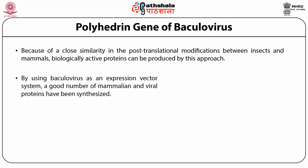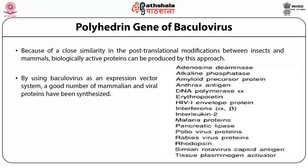By using baculoviruses as an expression vector system, a good number of mammalian and viral proteins have been synthesized. These include adenosine deaminase, alkaline phosphatase, amyloid precursor proteins, anthrax antigens, DNA polymerase alpha, erythropoietin, HIV-1 envelope proteins, interferons alpha and beta, interleukin-2, malaria proteins, pancreatic lipase, poliovirus proteins, rabies virus proteins, rhodoxin, rotavirus capsid antigen, and tissue plasminogen activator.